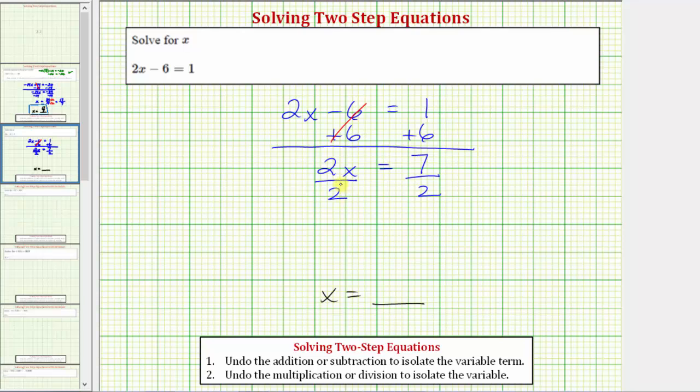Now looking at the left side of the equation, dividing by 2 undoes multiplying by 2. So the left side simplifies to just x. This is also 2 divided by 2, which equals 1, and 1 times x is just x.